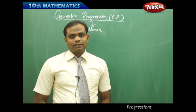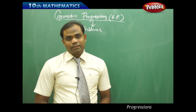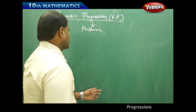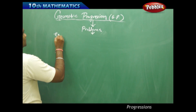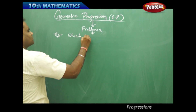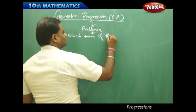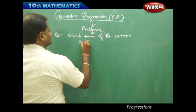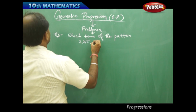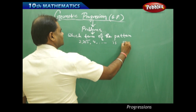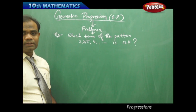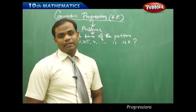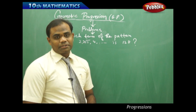Now let's see one more problem on geometric progression where we need to find the position, or the number of the term. So here the question is: which term of the pattern 2, 2√2, 4, etc., is 128? So I have a pattern where one of the terms is given to be 128. Now I want to know the position of this term 128. So let's identify the geometric progression and then find n.